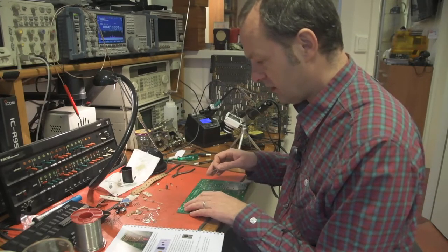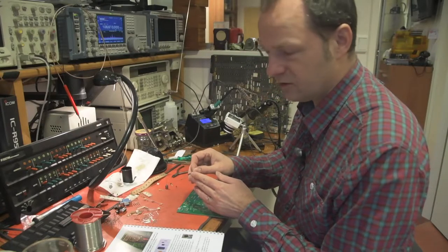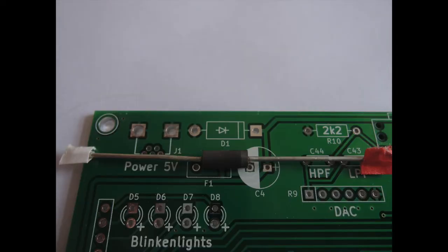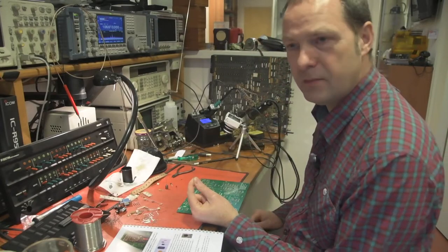You can see on the board, there's a marking and on the diode, there's a white stripe. So these have to correspond to each other. So it does matter in which position I solder it. Now it doesn't fit right away. I need to bend the wires.